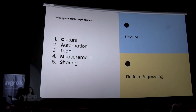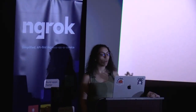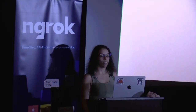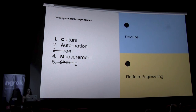Some of us may have heard of the CALMS framework. It was coined by Jez Humble, a co-author of Accelerate, which is a popular book in the DevOps space. It's basically a framework of principles that should be the core of a DevOps organization. While all five could be applicable here, I'm going to focus on three: culture, automation, and measurement.